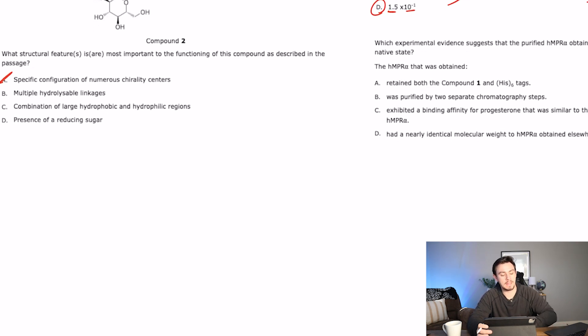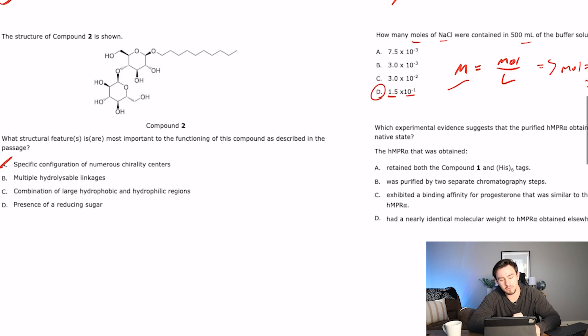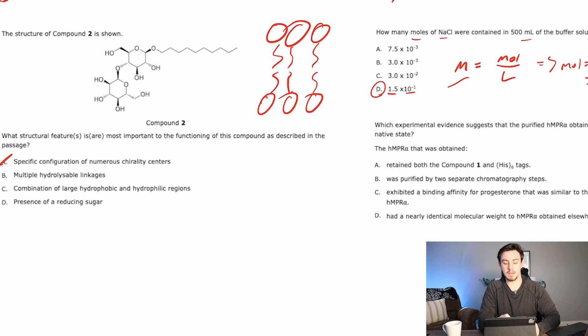And then C says a combination of large hydrophobic and hydrophilic regions. That's what we talked about, right? That's a detergent. So C kind of describes a detergent, so I like it. And then D says a presence of a reducing sugar. Well, that would help us with like one bond or something like that, but that's not going to help us break down a membrane because our membranes are made of a phospholipid bilayer. And it has a super nonpolar tail and a super polar head, hydrophilic head, because you lick with your tongue, your tongue is on your head. Hydrophilic head, hydrophobic tails. And so we would need something that's going to dissolve both of those. So we have a lot of hydrophobics to dissolve the tails, a lot of hydrophilics to dissolve the heads. So the correct answer here is C.